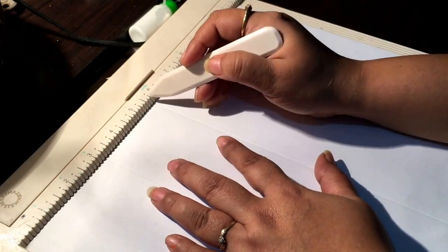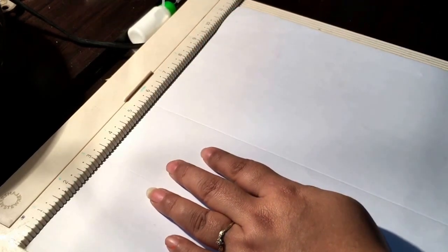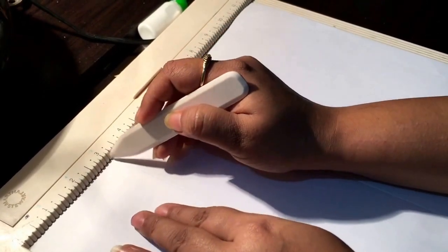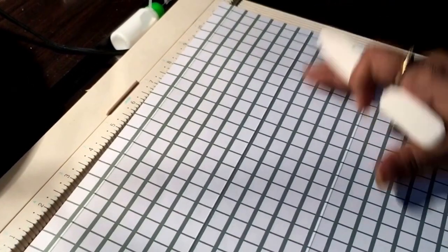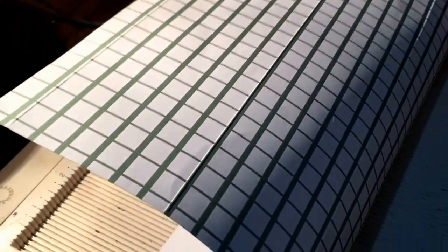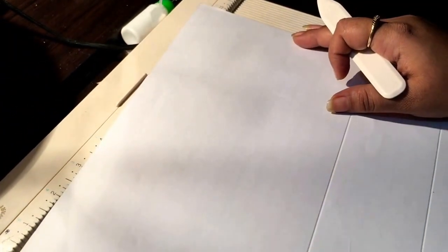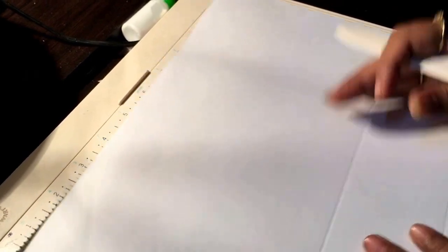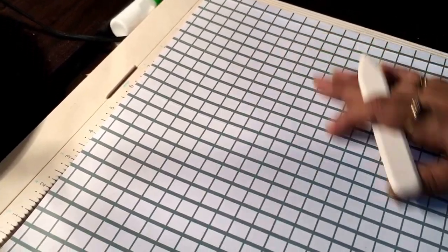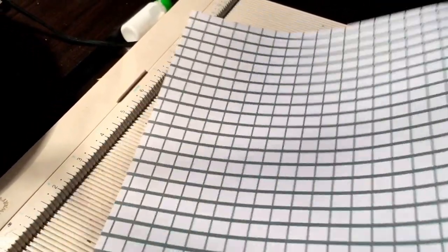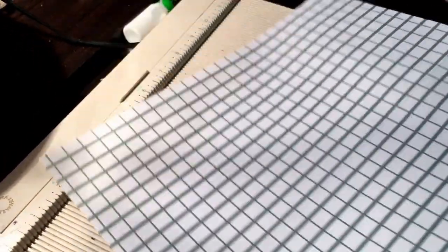One more thing before I go any further: try to choose a paper which does not have an orientation, because if it's an oriented paper then the design may go all upside down when you fold. Try to choose a paper which doesn't have any orientation like this one. It's a grid pattern and it doesn't have to be this way or that way. It will look fairly decent both ways.